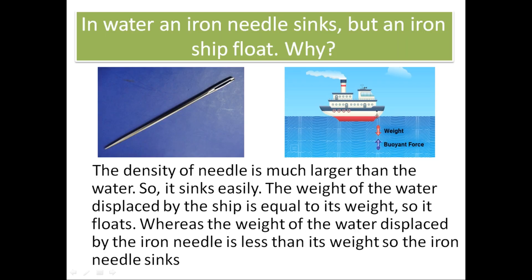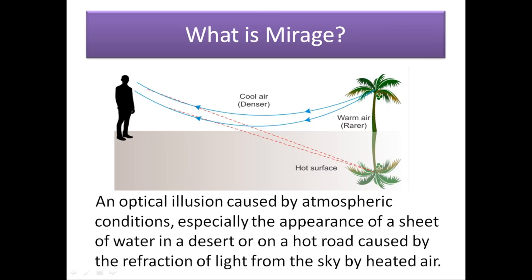Our next question is also very important and you should know its answer: in water, an iron needle sinks but an iron ship floats — why? The density of the needle is much larger than water, so it sinks easily. The weight of water displaced by the ship is equal to its weight, so it floats. Whereas the weight of water displaced by the iron needle is less than its weight, so the iron needle sinks.